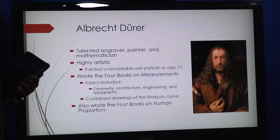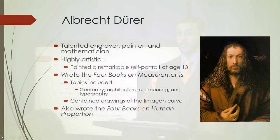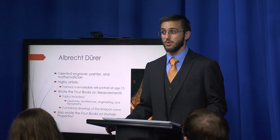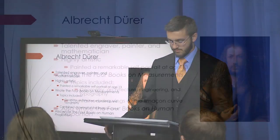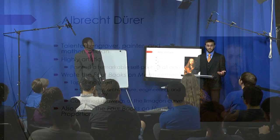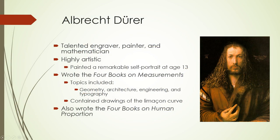The next gentleman I'm going to talk about is Albrecht Dürer. He's a talented engraver, painter, and mathematician. One of the things he did was make a self-portrait at the age of 13. He also wrote a book — the Four Books of Measurements — with topics including geometry, architecture, engineering, and topography. This book also contained drawings of the curve, which is why he should be given credit for it. He also wrote the Four Books on Human Proportion.